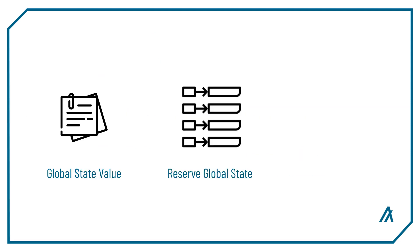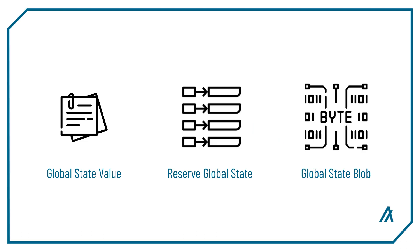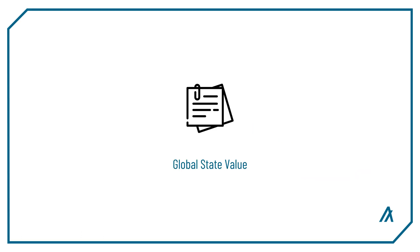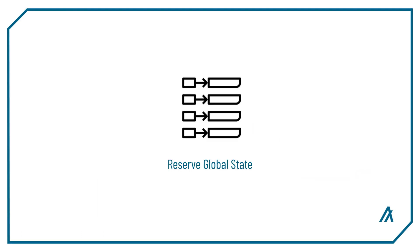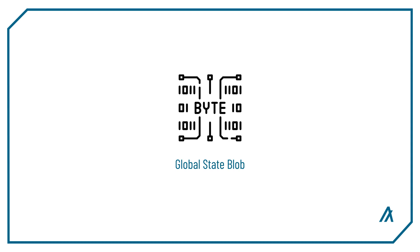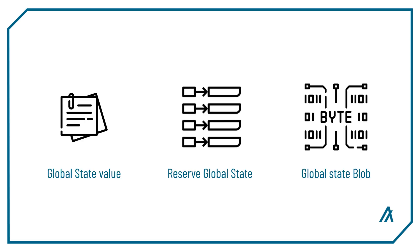There are three types of global states in Beaker: the global state value, reserved global state, and global state blob. Global state value is a normal state that holds one value. The reserved global state is a dictionary-like state where you can store multiple key-value pairs. It's best to use this when there should be a number of reserved states but the keys to the values are uncertain at build time. Global state blob lets you write buffers to a byte array and is best used to store large data into one huge byte array. Let's go through each one and see what they are.